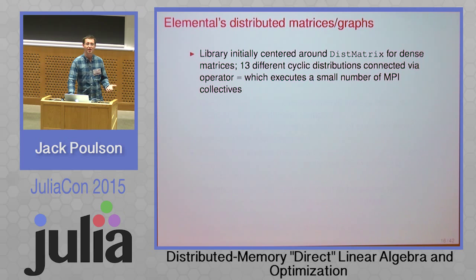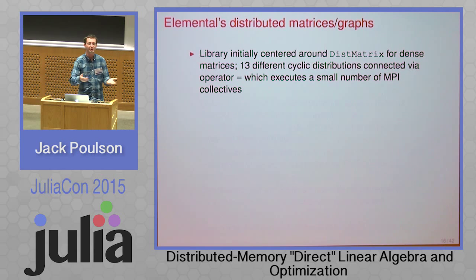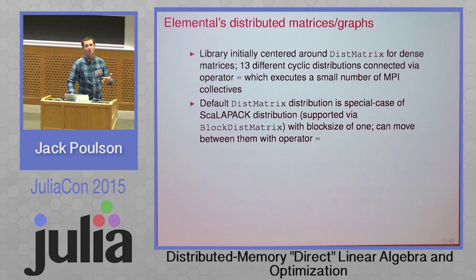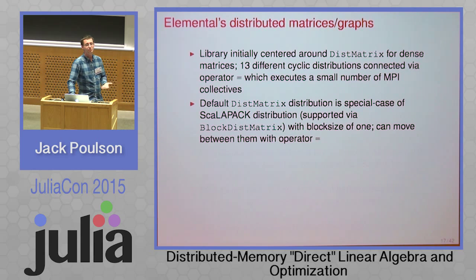For those familiar with ScaLAPACK, the distribution I use for dense linear algebra is just a special case where you have block sizes of one. I added an interface to ScaLAPACK called the block DistMatrix class, and hooked it up so that you can just do operator-equal when moving between the two data distributions. So once you've interfaced with my library, you also have an interface to ScaLAPACK. I use this internally for pseudo-spectra: I do my own reduction to Hessenberg form, convert to block form for ScaLAPACK, call their Hessenberg QR algorithm, convert back, and compute pseudo-spectra in my distribution.